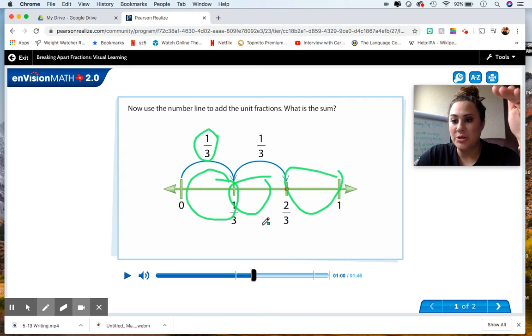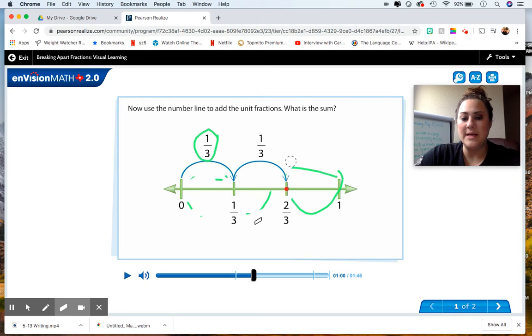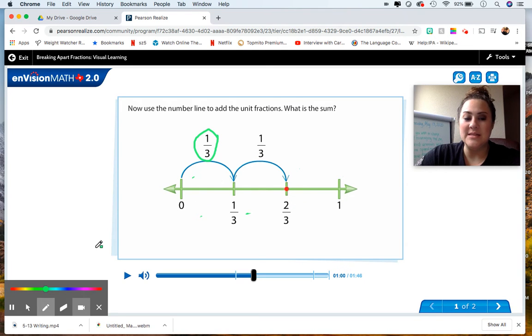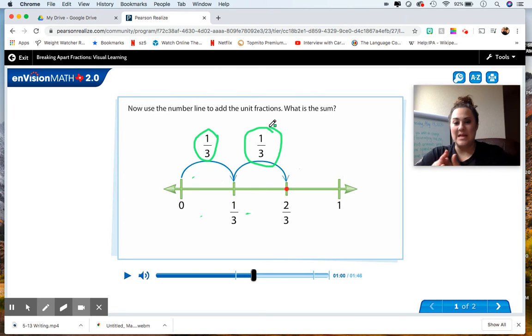Now when we have the unit fraction, remember, our numerator, just as he said, will always be one. Now they're asking us to use the number line to add the unit fractions together. So let me erase this. Remember, our unit fractions are the fraction that shows how many equal pieces this number line is divided into. So I circled one-third and one-third, and we are going to add those together.